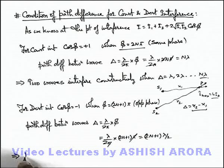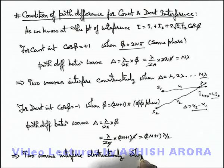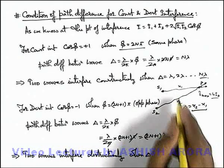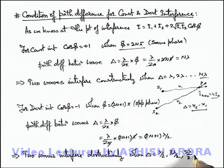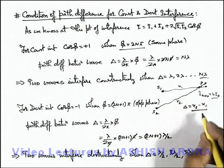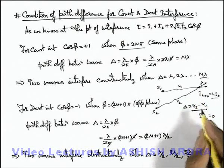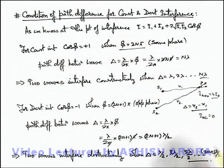This implies the 2 waves interfere destructively when the path difference x₂ minus x₁ is an odd multiple of λ/2 — that is λ/2, 3λ/2, 5λ/2, and so on. In such a situation, the intensity at the point of superposition will be zero if the 2 sources produce equal intensities, or it can be given as (√I₁ minus √I₂)².